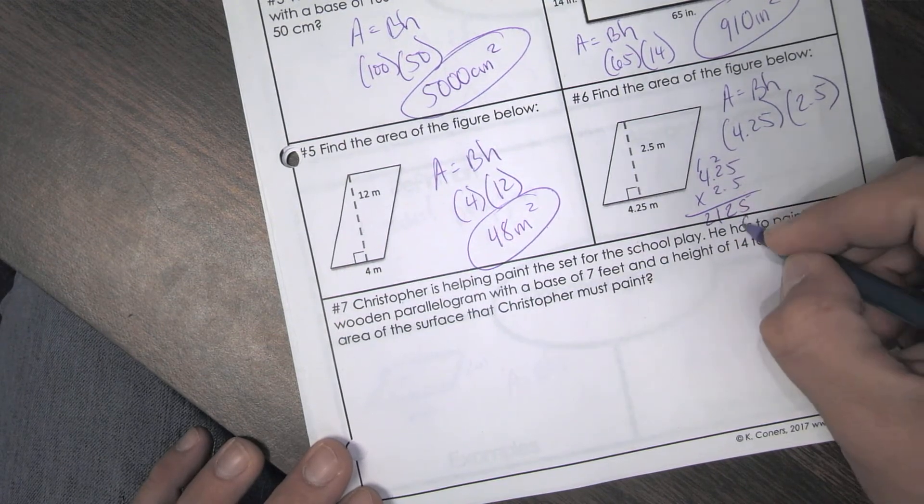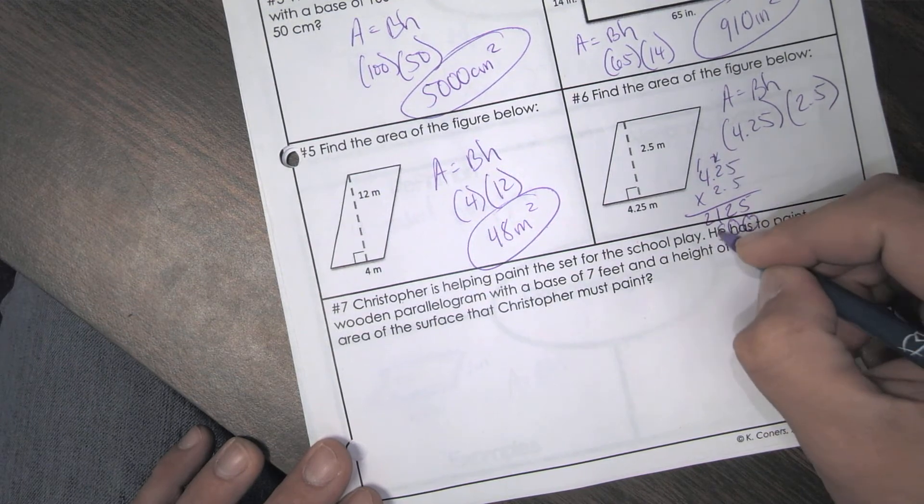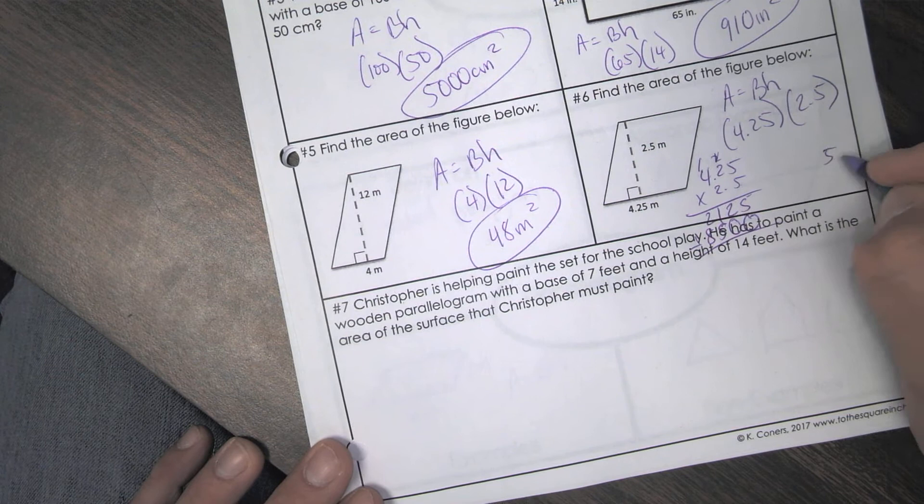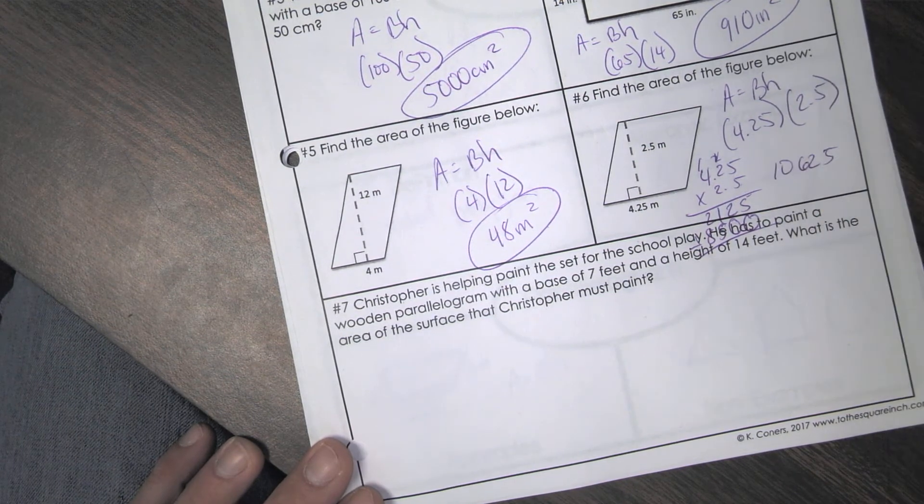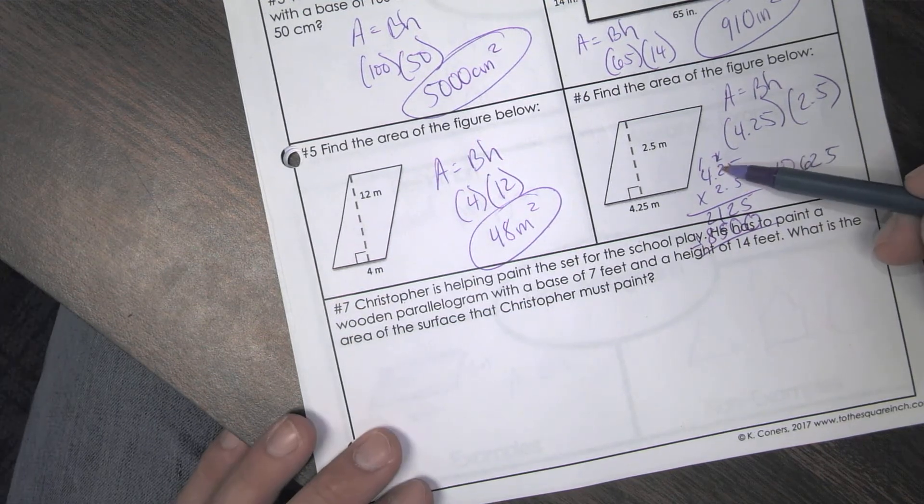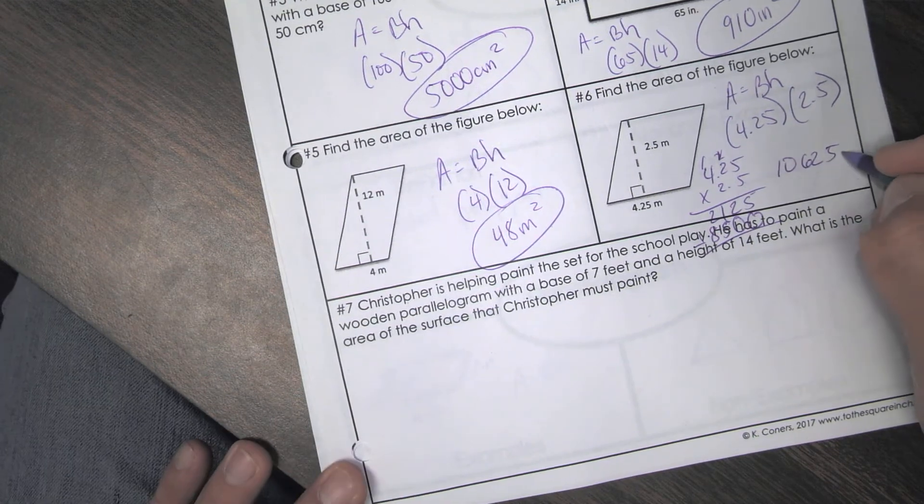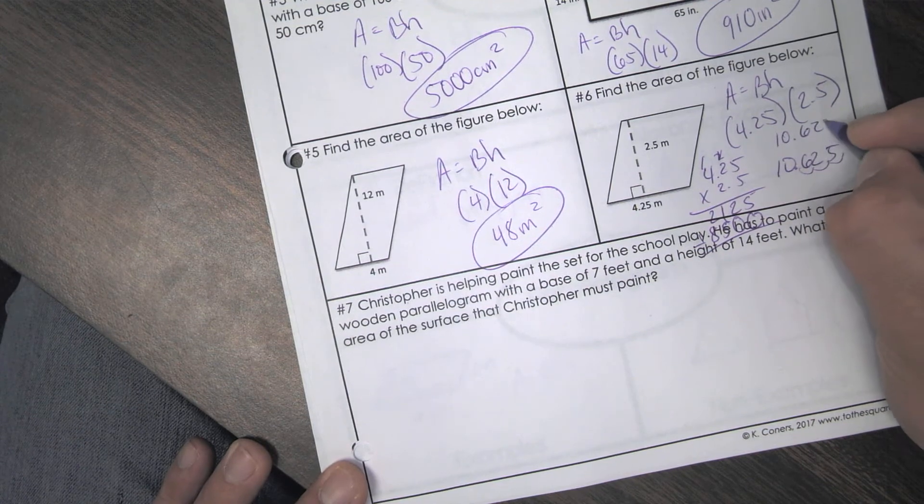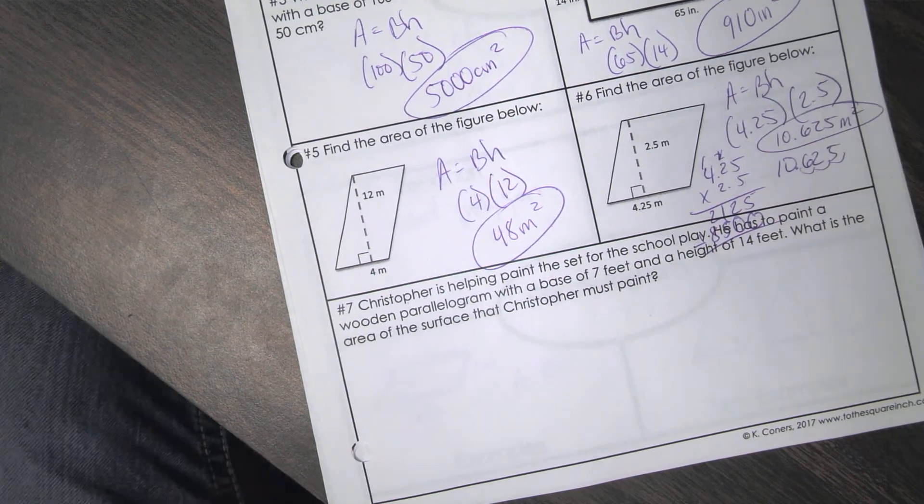So then we move down. 2 times 5 would be 10. 4, 5, and then 8. So once you add this up, you get 5. Is that going to be 6 and 10? Now this is where we move our decimal. So I look. I have 2 after this, 1 after that. So that's 3 total. So 1, 2, 3. So it should be 10.625 meters squared.